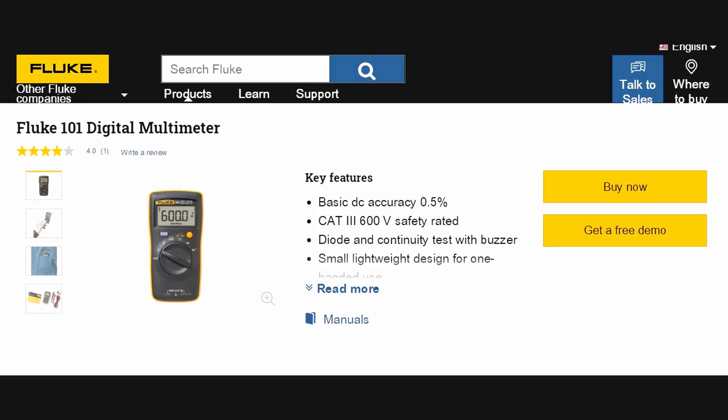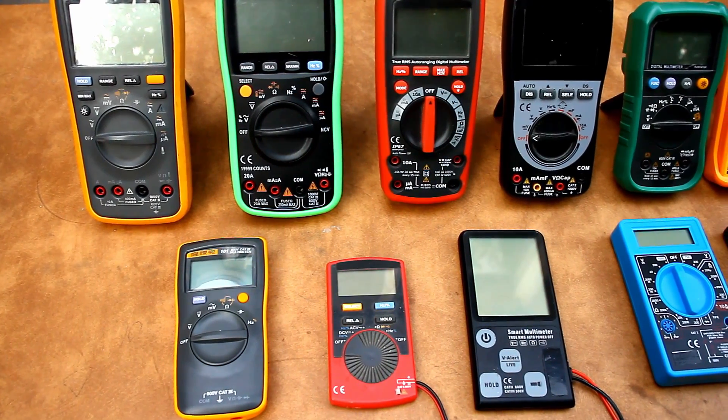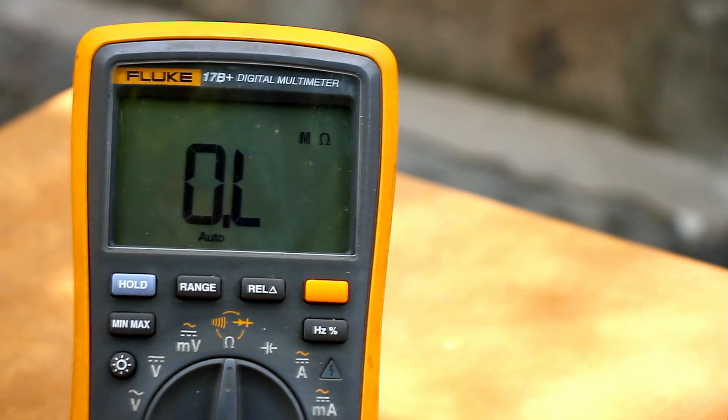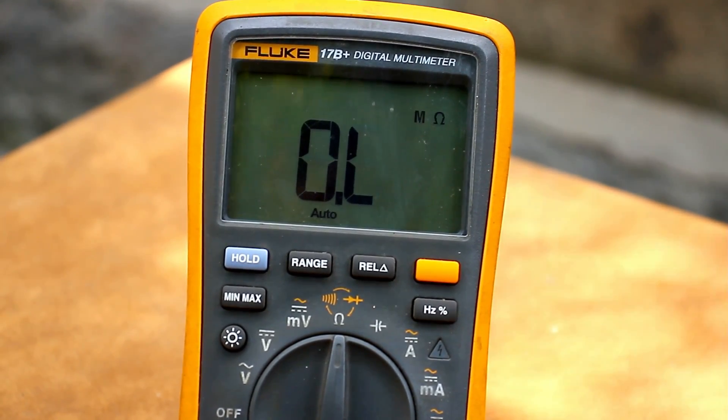One of the most basic options, like the Fluke 101, will set you back around $50. A Chinese multimeter similar in functionality will cost 5 times cheaper. An average Fluke measuring device with all the conveniences such as Fluke 12, 15, 17, 18 will cost from $100 to $150.